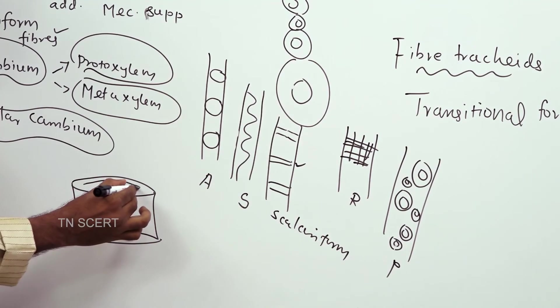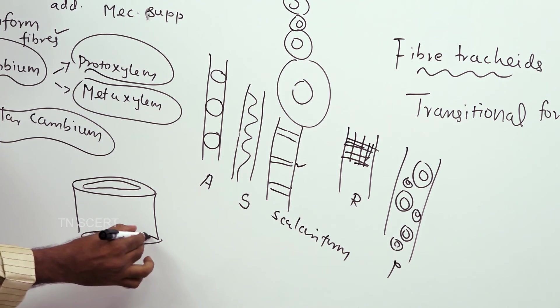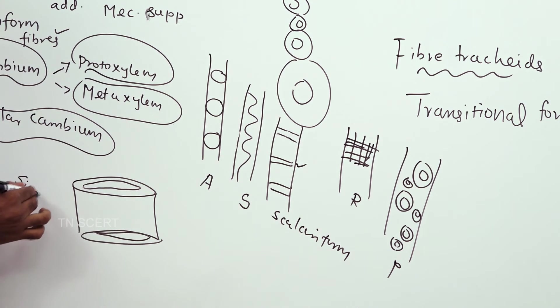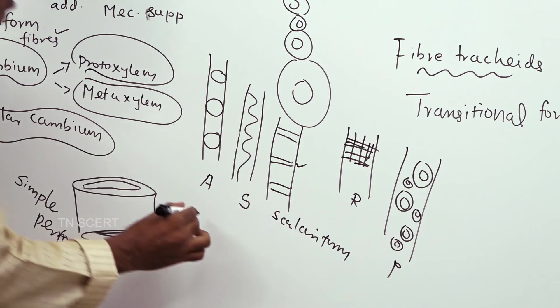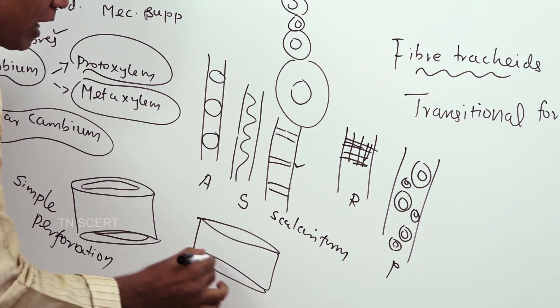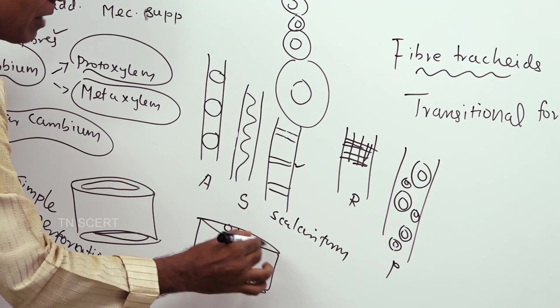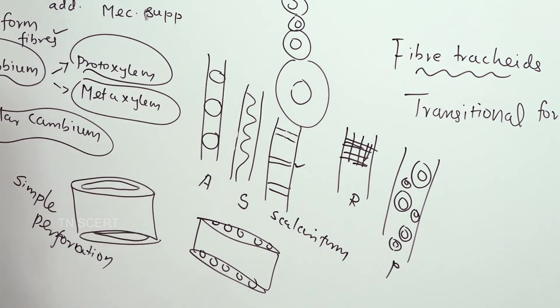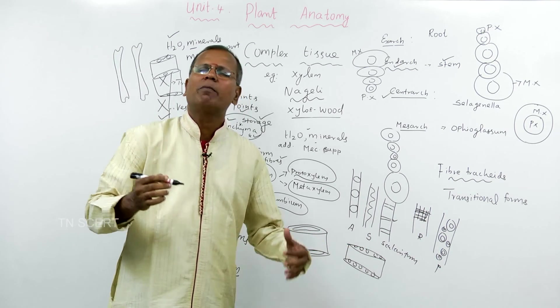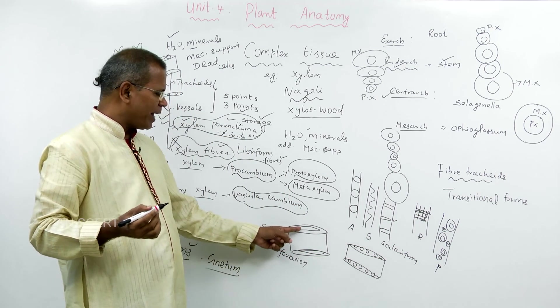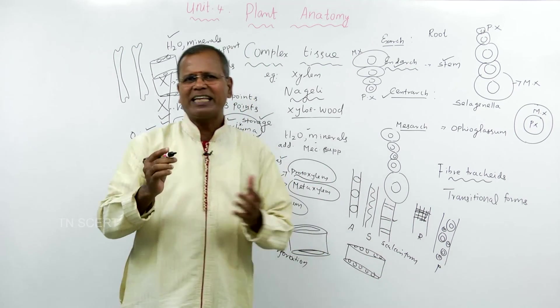The vessel is with perforation. If the vessel possesses only one hole in it, we are calling it a simple perforation plate. If there are many perforations, it is called multiple perforation plate. Xylem vessel with only one perforation is simple perforation plate. Vessel with more perforations is multiple perforation plate.